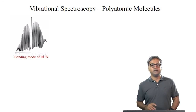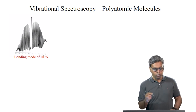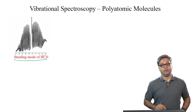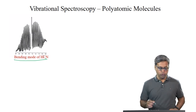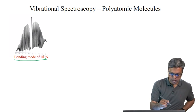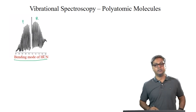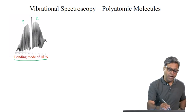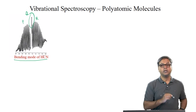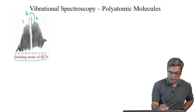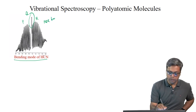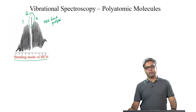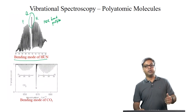This is indeed what we see in the bending mode spectrum of HCN, which is a perpendicular vibrational mode. We have both P and R branches, and in the center we have an intense Q branch — a PQR band profile. For carbon dioxide we will have a very similar spectrum.